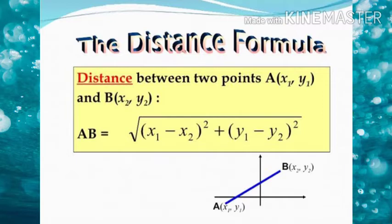Let us consider any two points on the graph. Here I have taken two points A and B. The coordinate of A is considered as (x1, y1) and the coordinate of B is considered as (x2, y2). The formula is: AB = √((x1 - x2)² + (y1 - y2)²). This is the formula to find the distance between any two points on the graph.